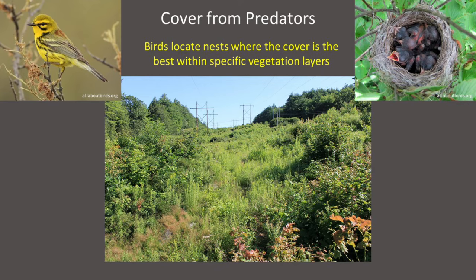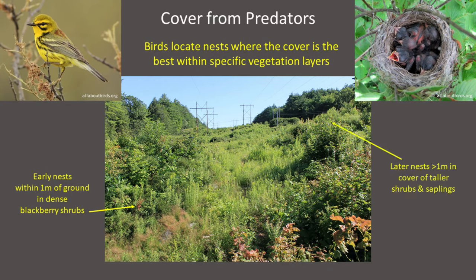For example, prairie warblers always nest within the shrub layer, but when birds start nesting in early spring, most of the tallest shrubs and saplings haven't leafed out yet. So early nests are usually located within about a meter of the ground in the dense cover of blackberry shrubs, which leaf out early. Many of these early nests get predated because they are so close to the ground. By the time the birds re-nest, many taller shrubs have finally leafed out, so most later nests are located greater than one meter above the ground in denser vegetation, where they are less susceptible to predators.